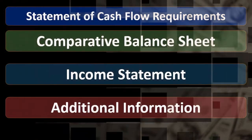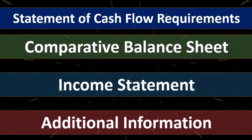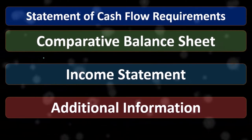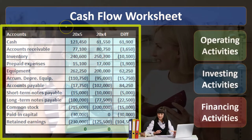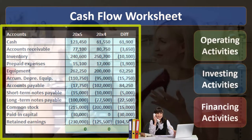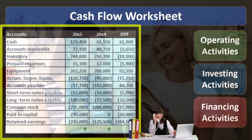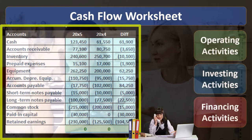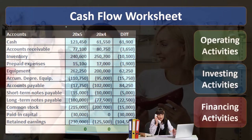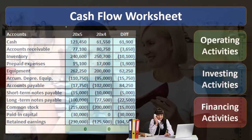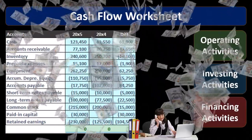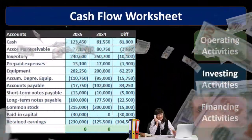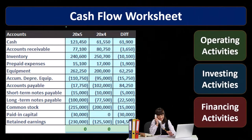We'd go into the general ledger and look at that added information. Once we have this information, our major component we're going to use is going to be the comparative balance sheet — that's where we will start. The comparative balance sheet is going to be used to make a worksheet such as this. This may seem unusual considering we're talking about a cash flow statement — we're talking about activity, things that are happening over time.